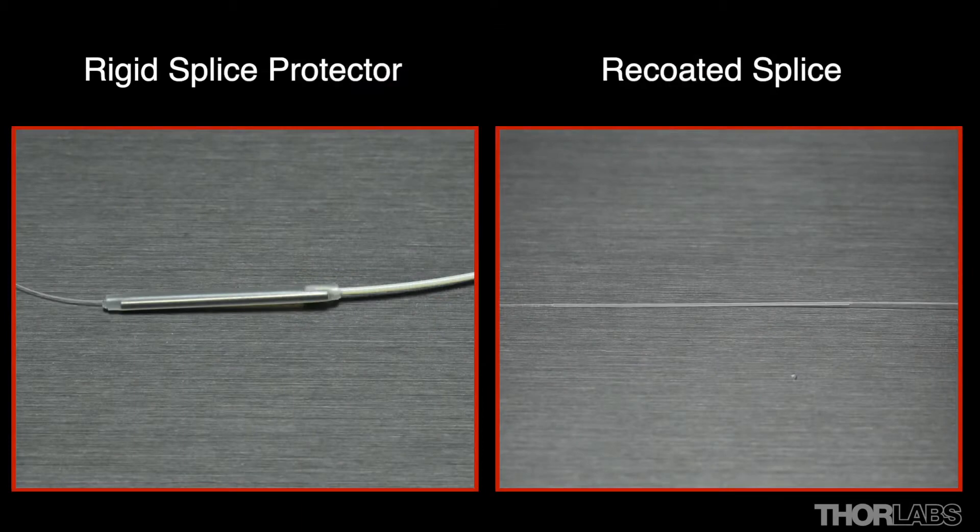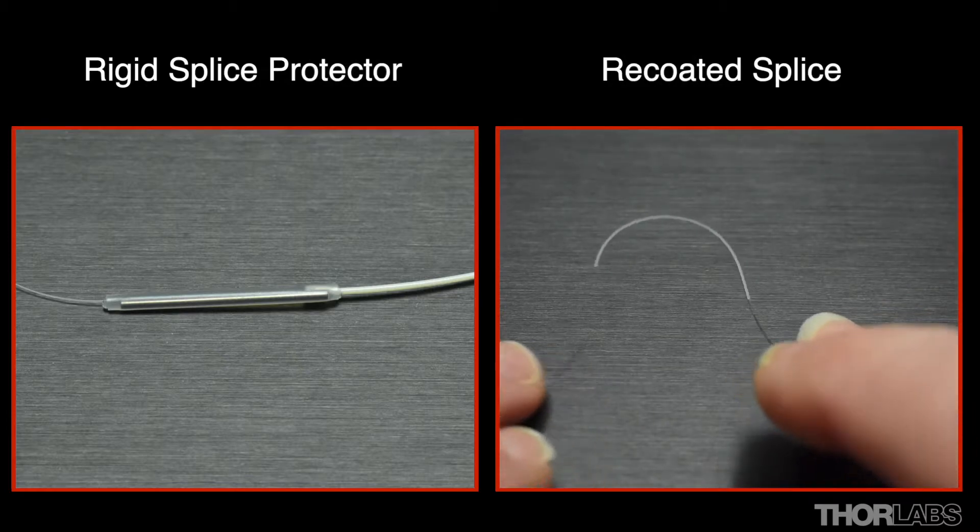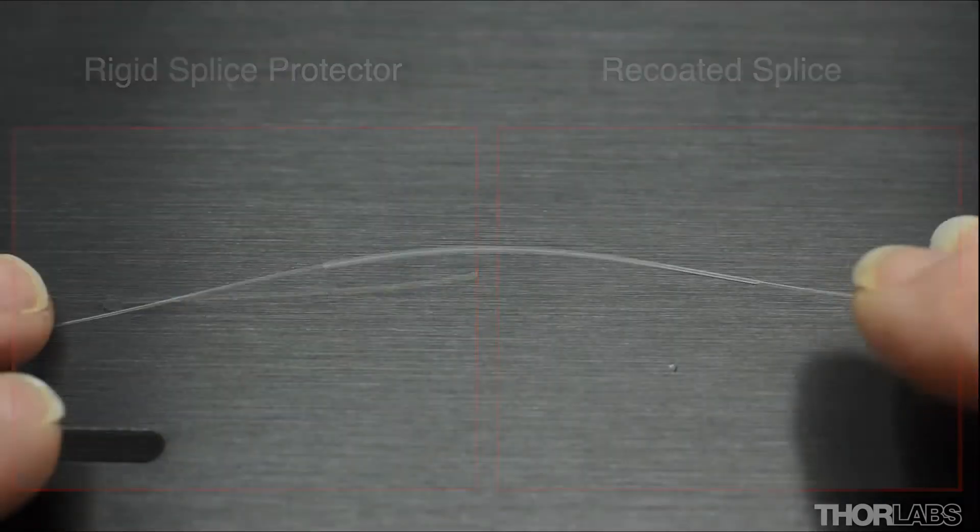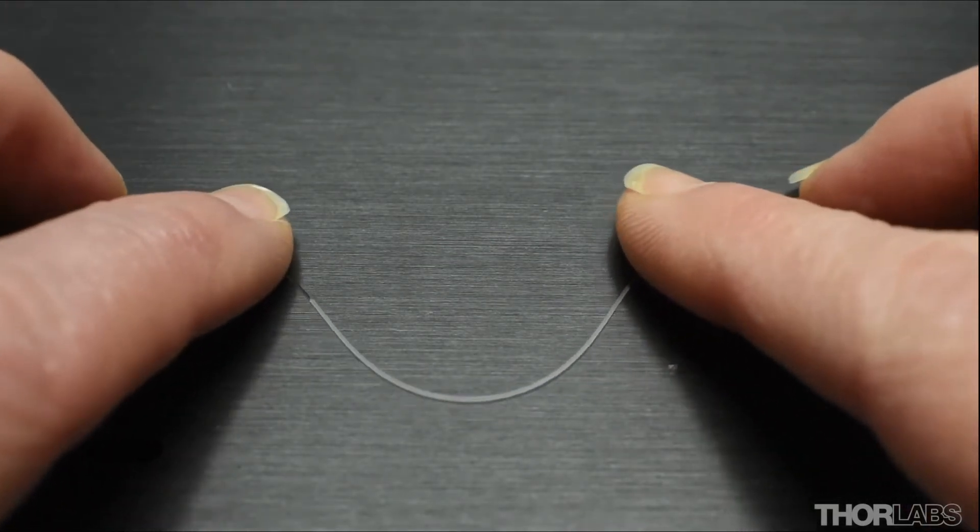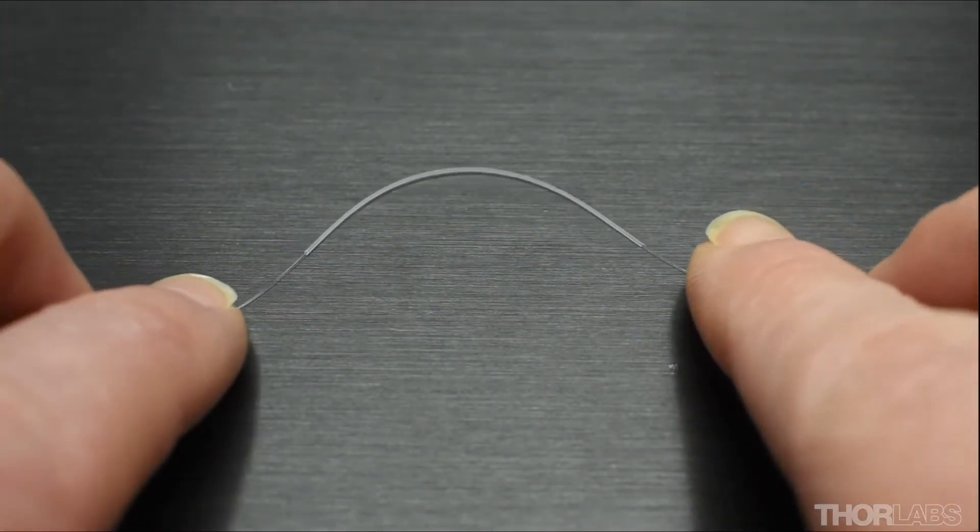Unlike rigid splice protectors, recoating maintains fiber flexibility. However, it should be noted that recoating a splice does not make the splice stronger. This is determined by the quality of the prepared fibers and the fusion splice joint.